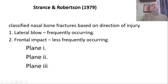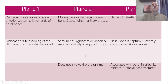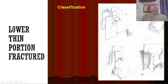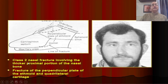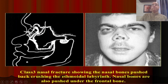Stans and Robertson described that fractures frequently occur when the blow is from the lateral side, or there can be a frontal impact subdivided into planes one, two, and three. For undergraduates, that level of detail is not required but can be checked in the literature. Plane one involves the lower thin portion of the nasal bones. Plane two involves the thicker proximal portion of the nasal bones, the perpendicular plate of the ethmoid, and the vomer, extending to the quadrilateral cartilage of the nasal septum. In plane three, the nasal bones are pushed under the frontal bones.